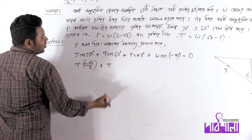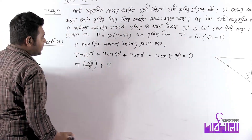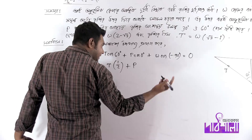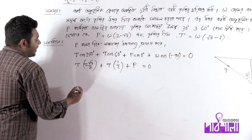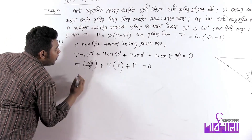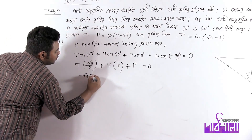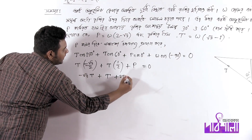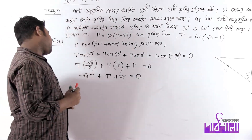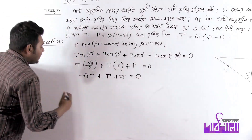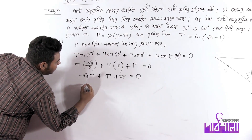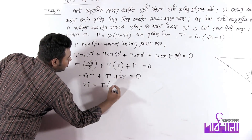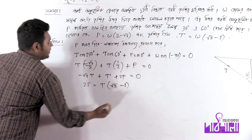t cos 60 — cos 60 means half. And p cos 0 means p. And w cos minus 90 plus 90 is equal to 0, so this is equal to 0. We have to simplify this: minus root t plus t plus 2p equal to 0.